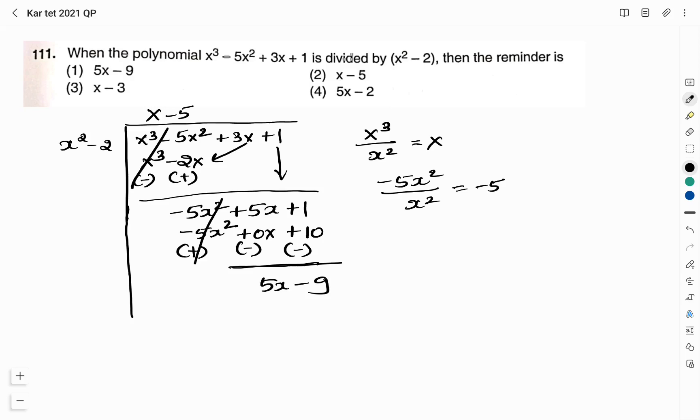1 minus 10 is minus 9. When the given polynomial is divided by x square minus 2 we get x minus 5 as quotient and 5x minus 9 as remainder. For the remainder here is option 1: 5x minus 9.